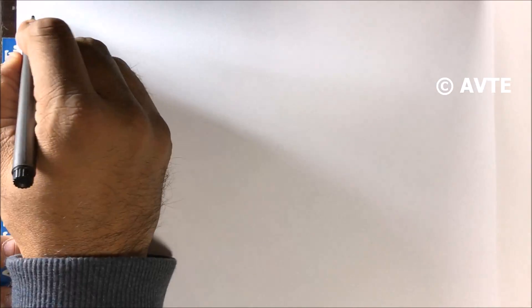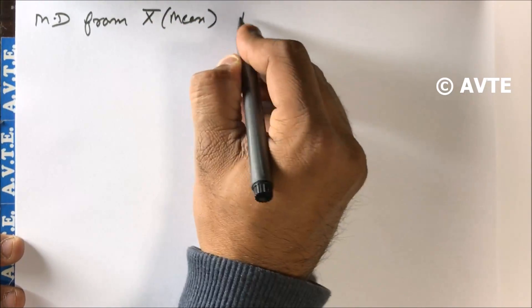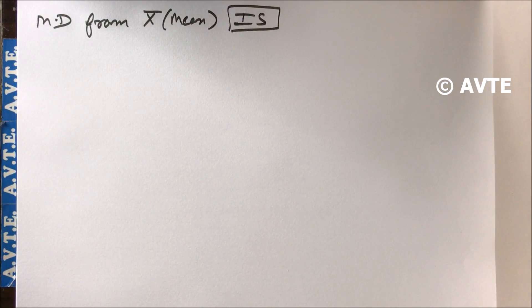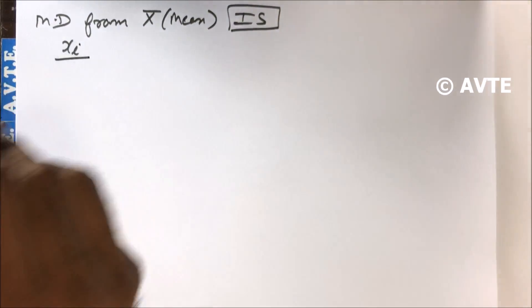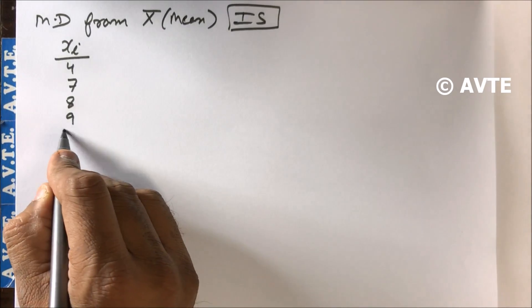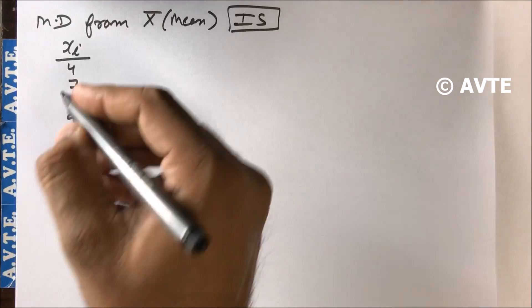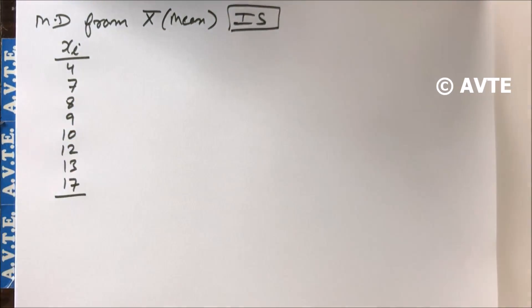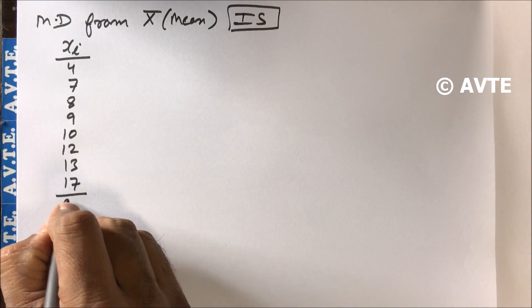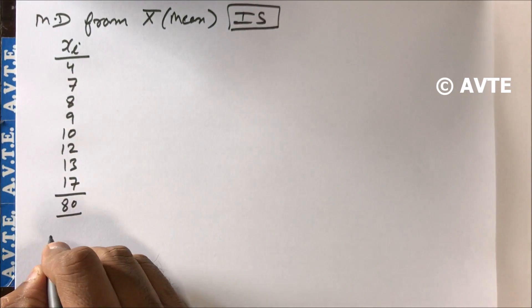First we do mean deviation from mean for individual series. We have xi values: 4, 7, 8, 9, 10, 12, 13, 17. The total of xi is 80, and n is 8.